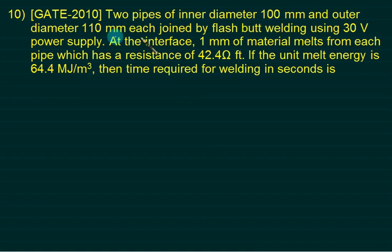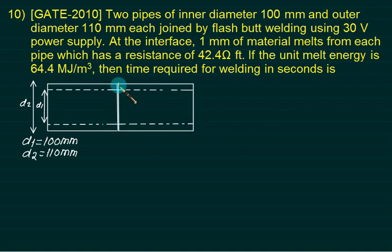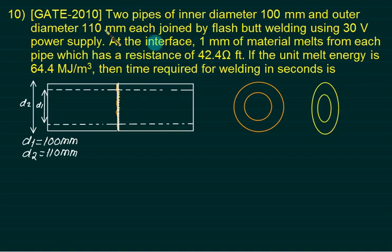Two pipes of inner diameter 100 and outer diameter 110. So this one is D1 and this one is D2. D1 is 100 and D2 is 110. Each joined by flash butt welding. So for butt welding you have to move this part to this side. So this one is joined now. So welding is to be performed at this point. So this one is our DI and this one is our DO. It says that at the interface, 1 mm thick material melts from each pipe which has a resistance of 42.4. So I have to show it like this. So one pipe, 1 mm is this and on other side also 1 mm.